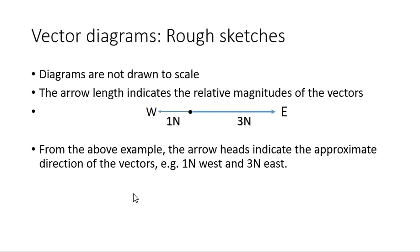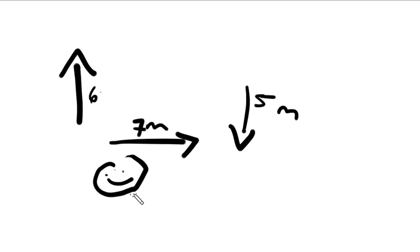As mentioned for rough sketches, the diagrams are not drawn to scale, and the arrow length indicates the relative magnitudes of the vectors. In our example above, the arrow heads indicate the approximate direction, taking into consideration force. They are approximate, so they are not calculated to scale at any point in time.